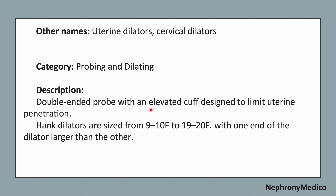Identifying points: it is a double-ended probe with an elevated cuff designed to limit uterine penetration. Hank dilators are sized from 9-10F to 19-20F, with one end of the dilator larger than the other.